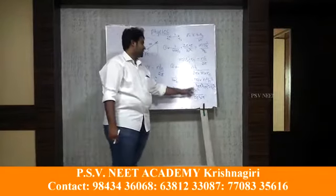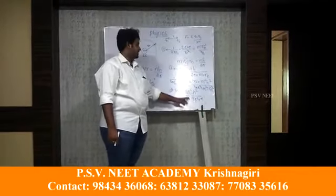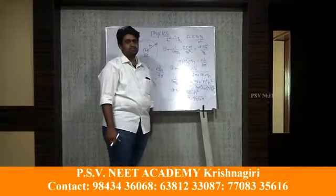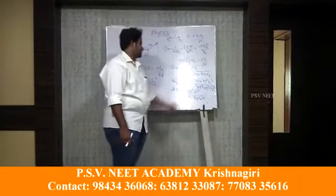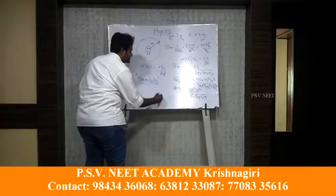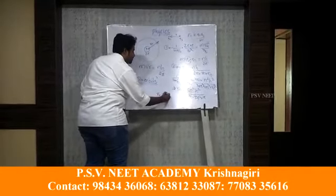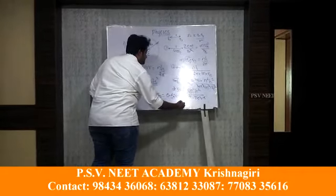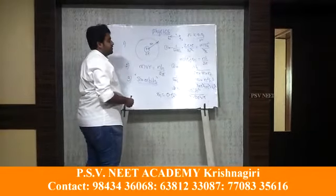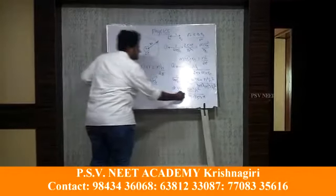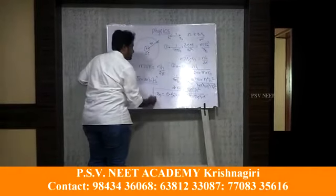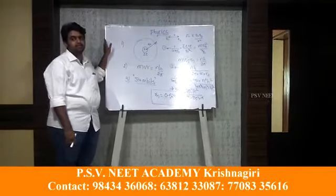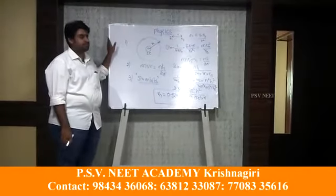The orbit number n and the atomic number Z can vary; all remaining terms are universal constants. Substituting their values gives the final equation: Rn = 0.529 × n² / Z, where the radius is in angstroms. One angstrom equals 10⁻¹⁰ meters. Thank you.